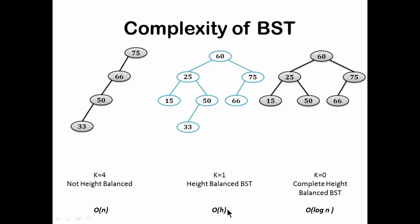If you have a skewed tree, you can convert it to a height-balanced tree. Perform an in-order traversal — it will explore 33, then 50, then 66, then 75 — and store them in an array. Take the midpoint of that array, make that midpoint the root, and populate the other elements. You will get a height-balanced tree. This is one way to convert a skewed BST into a height-balanced BST.